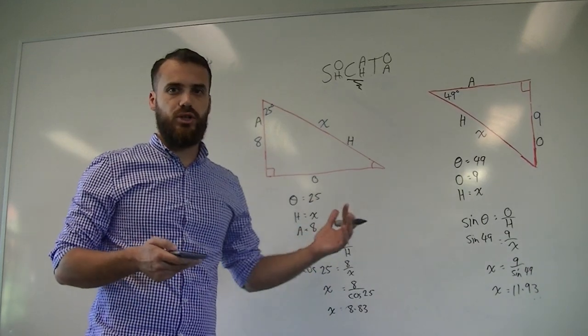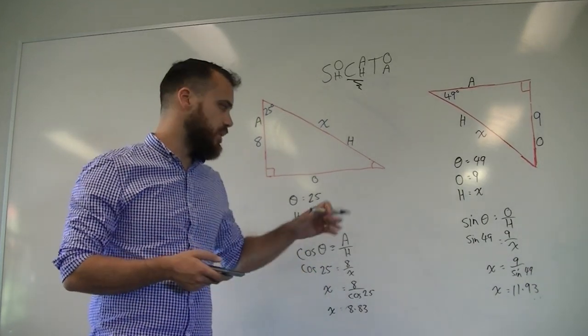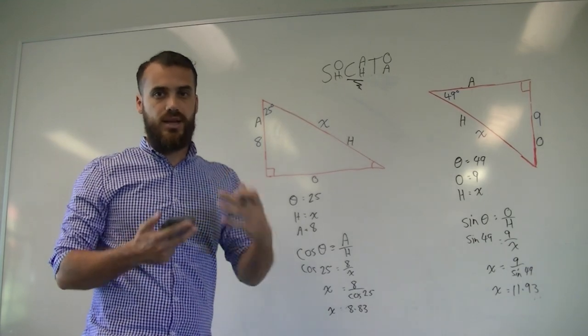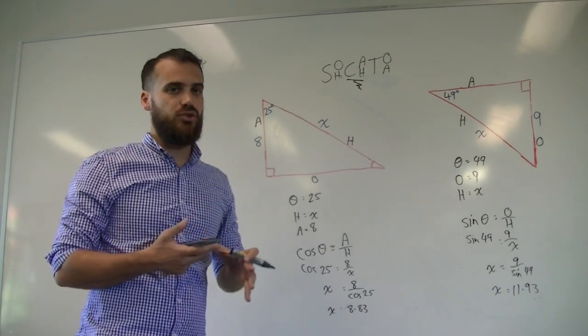Okay, that's solving a side using trigonometry. You've seen two examples now. One where x is on the top, one where x is on the bottom. In the next video, we're going to do our last little bit of trigonometry, which is finding the angle if you don't know the angle.